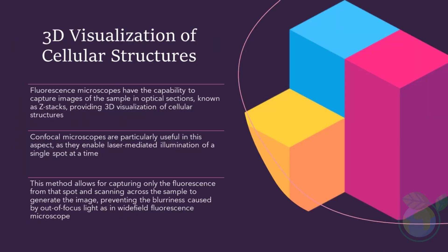Fluorescence microscopes have the capability to capture images of the sample in optical sections, known as Z-stacks, providing 3D visualization of cellular structures. Confocal microscopes are particularly useful in this aspect, as they enable laser-mediated illumination of a single spot at a time. This method allows for capturing only the fluorescence from that spot and scanning across the sample to generate the image, preventing the blurriness caused by out-of-focus light as in wide-field fluorescence microscopy.